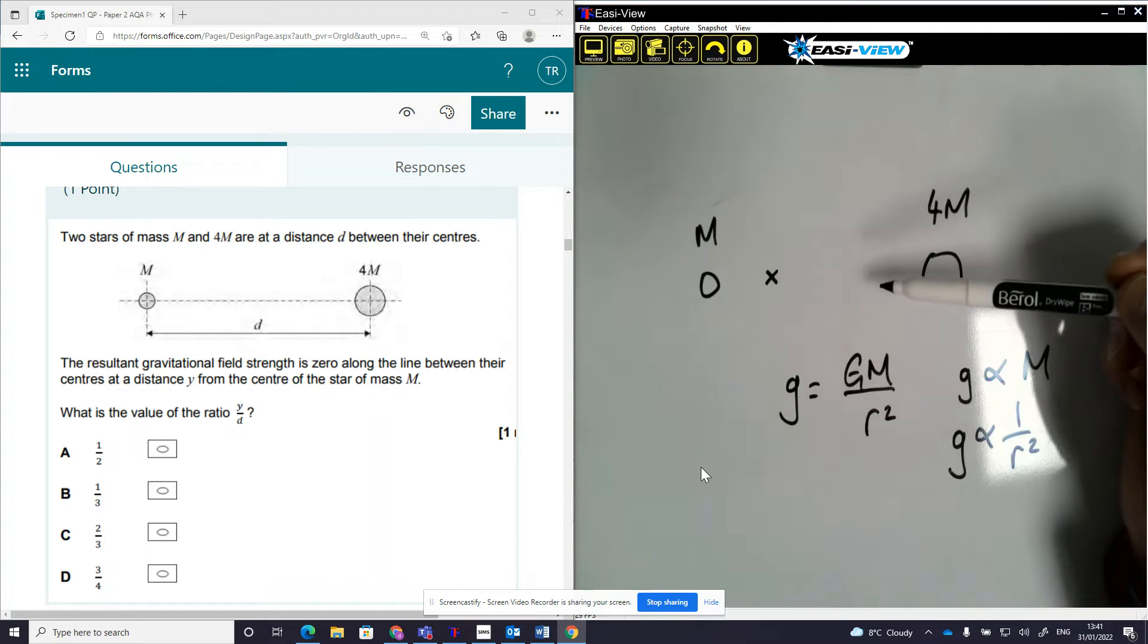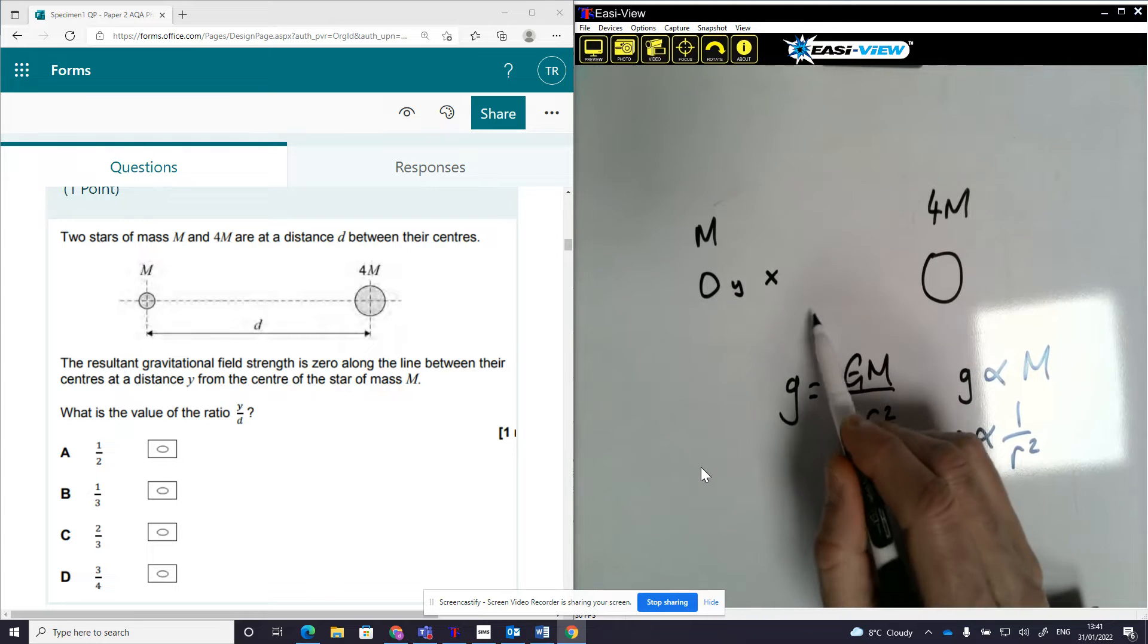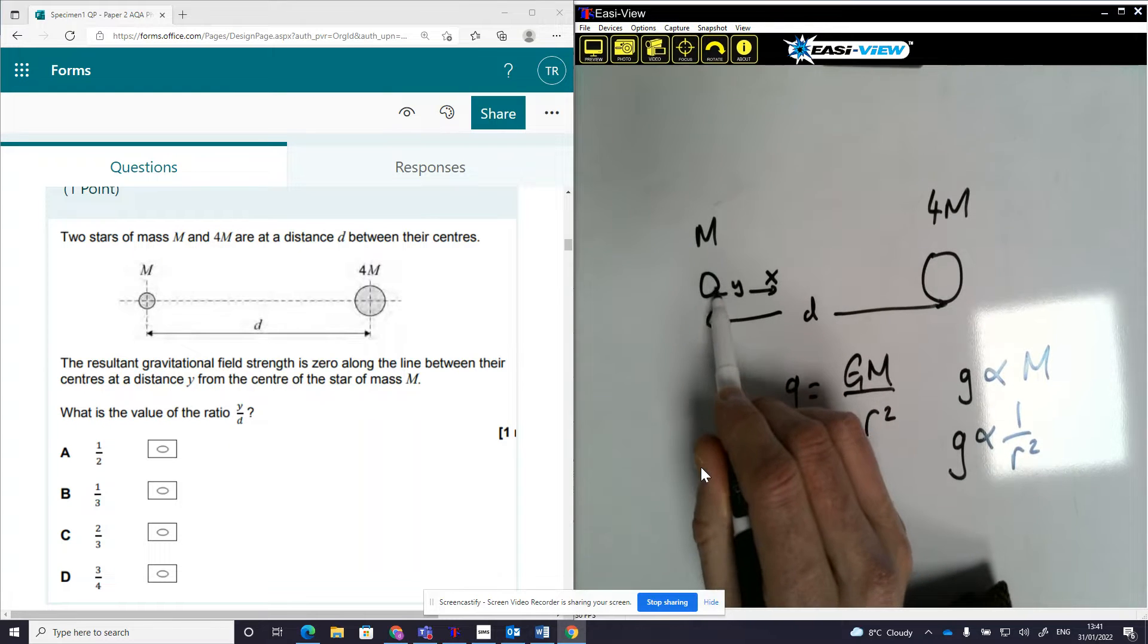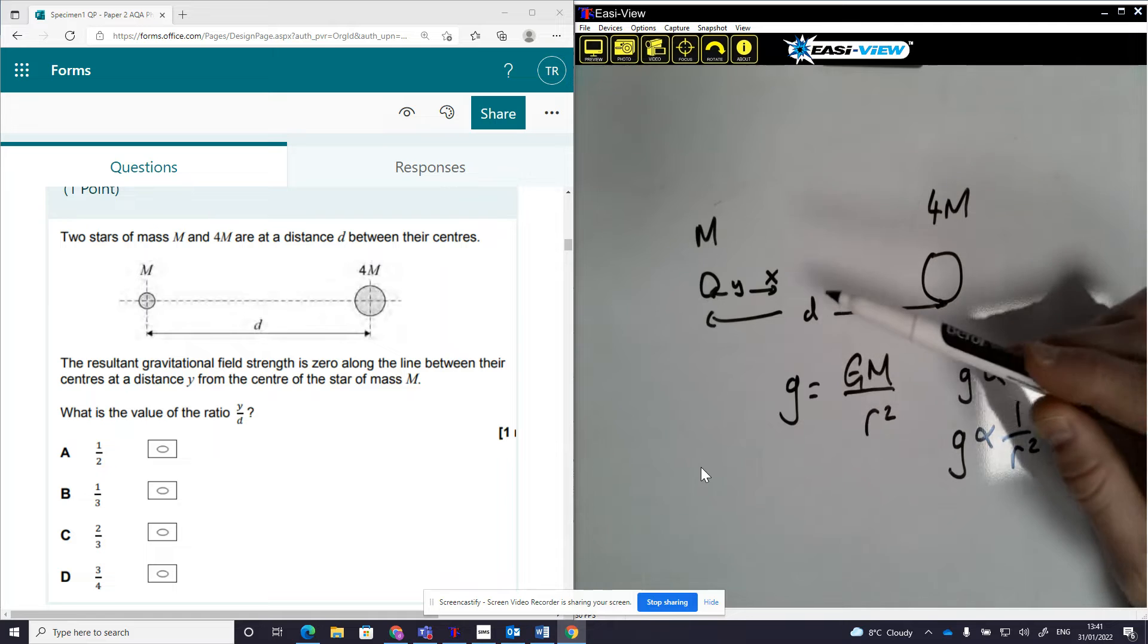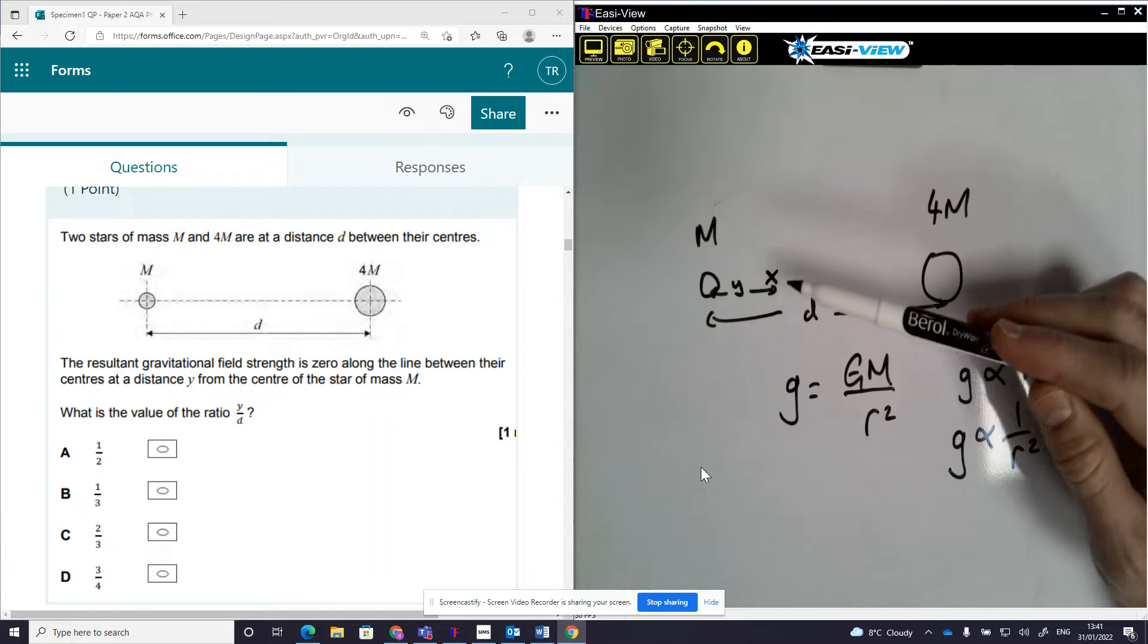We're asked for the point between these two where this Y value has a proportion of the total distance D. So Y is given as the distance from the center of mass M to the point where the overall gravitational field strength ends up at zero.